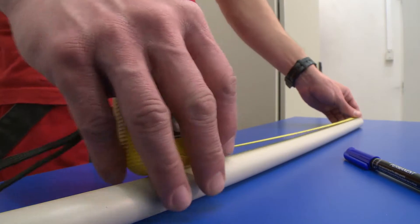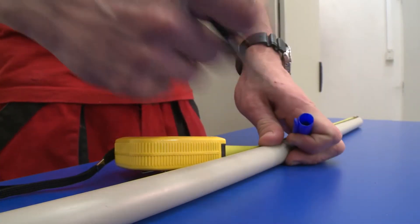We measure the needed length of tube and cut it off. Then we clean the pipe edge of any burrs.